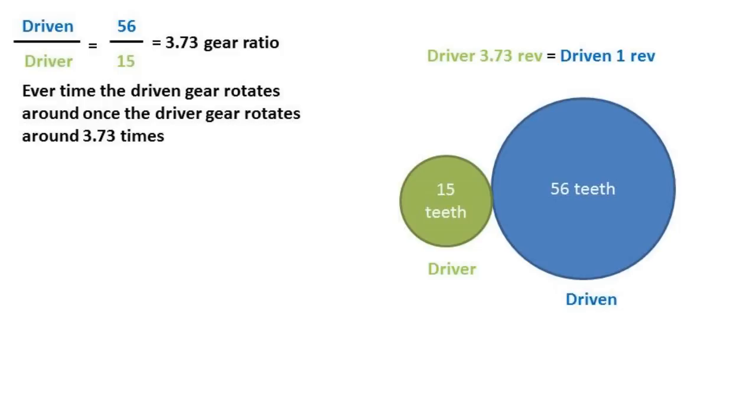In this example we have a driven gear with 56 teeth and a driver gear with 15 teeth. If we divide the number of driven gear teeth by the number of driver gear teeth, we get a gear ratio of 3.73. This means that every time the driven gear rotates around once, the driver gear has to rotate around 3.73 times.